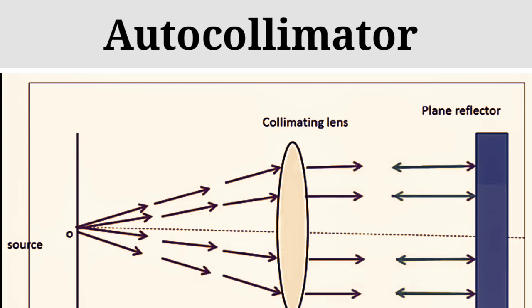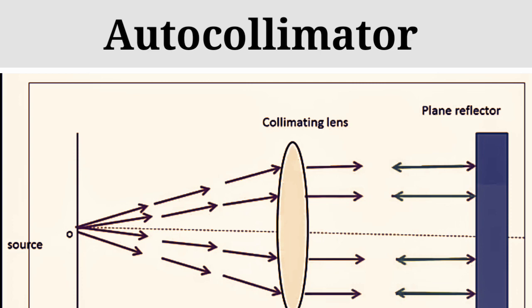जब आपकी जो parallel rays हैं वो आके आपके mirror को जो 90 degree पर रखा है उससे टकराएंगी तो reflect हो जाएंगी। और वो reflection उसी path में होगा जिस path से वो आई हैं, जैसा कि आपको diagram में दिखाया जा रहा है। जिस path से आपकी rays यानी प्रकाश की किरणें आई थीं, उसी same path में वापस चली जाती हैं।